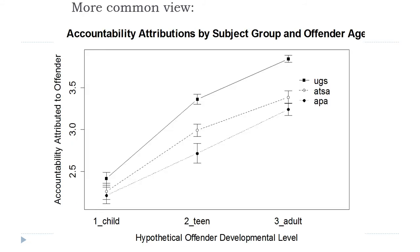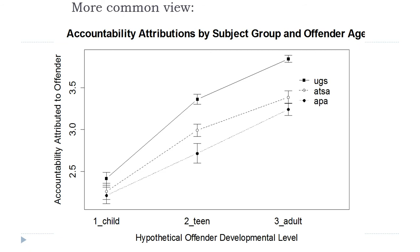It's more common to do means plots. The lines just help you organize the groups. The x-axis shows teen developmental level — whether the hypothetical offender was a child, teenager, or adult. There were not equal numbers — a whole bunch of adult ages and not very many teen or child ages. The lines for undergrads, APA, and ATSA are not perfectly parallel, and with an N of about 600 that non-parallelness is probably going to lead to a significant effect.